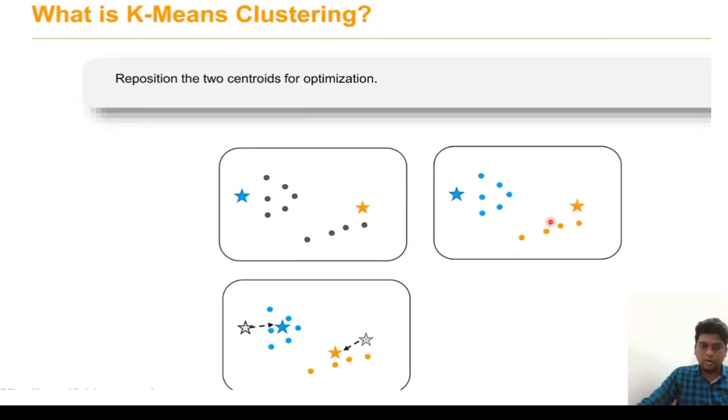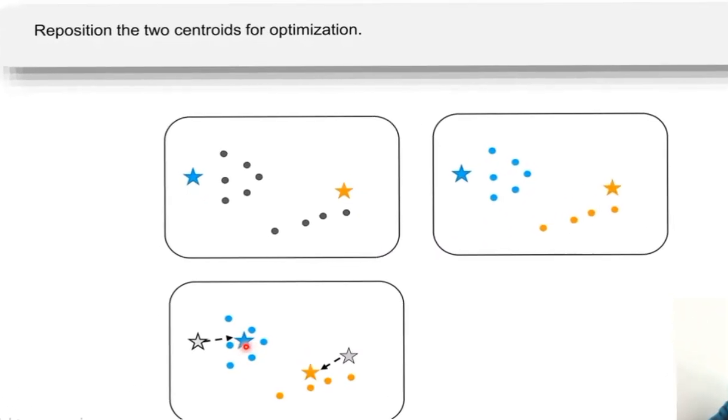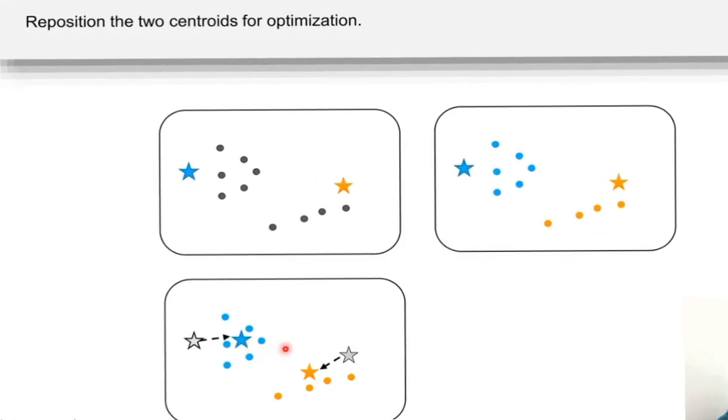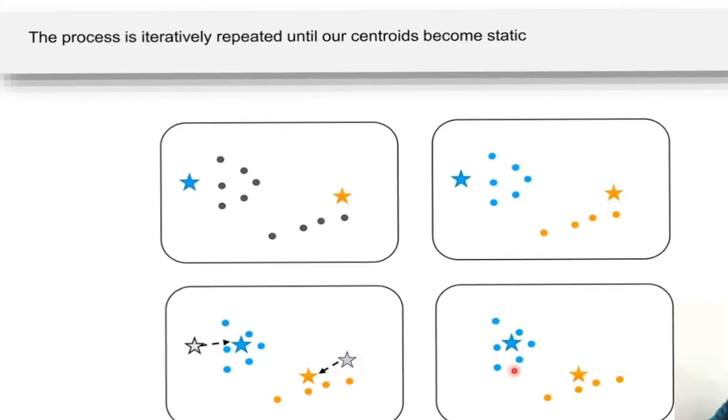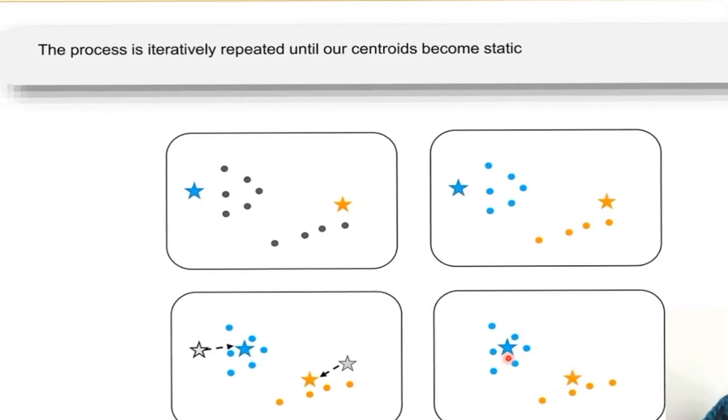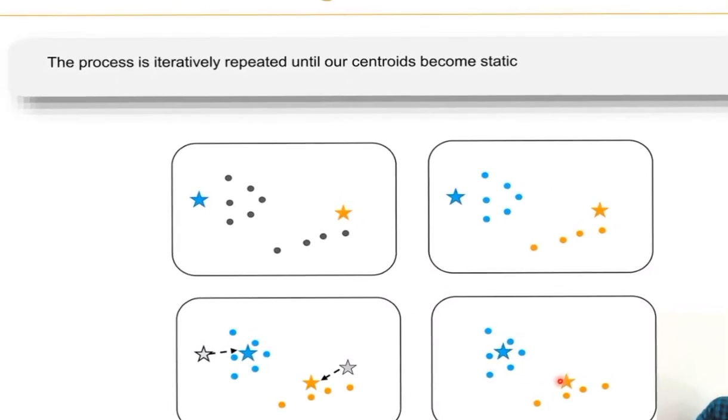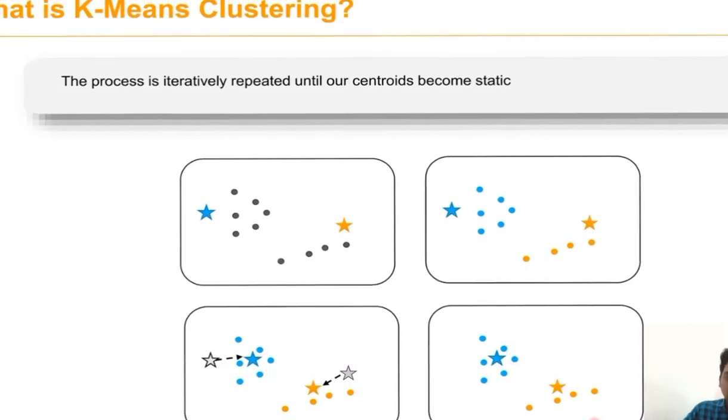We have to reposition the centroids to find the optimum values. Here we have found the new centroid, so it should be repositioned. Based on the data points and with the help of Euclidean distance we are finding this new centroid position. Until the condition becomes static we have to repeat this method. At one point of time it becomes constant.